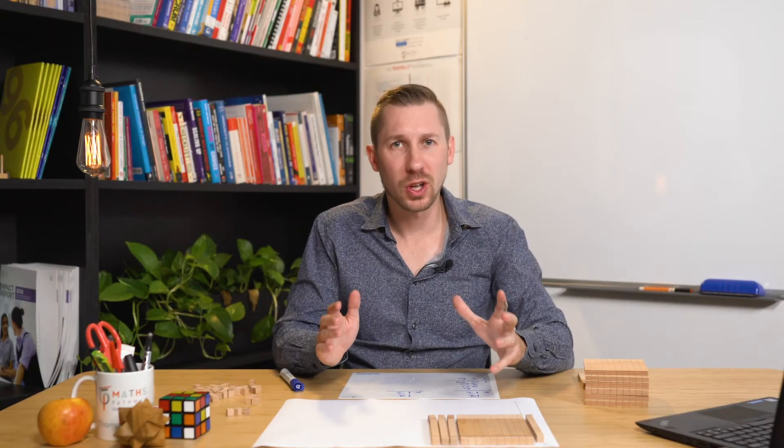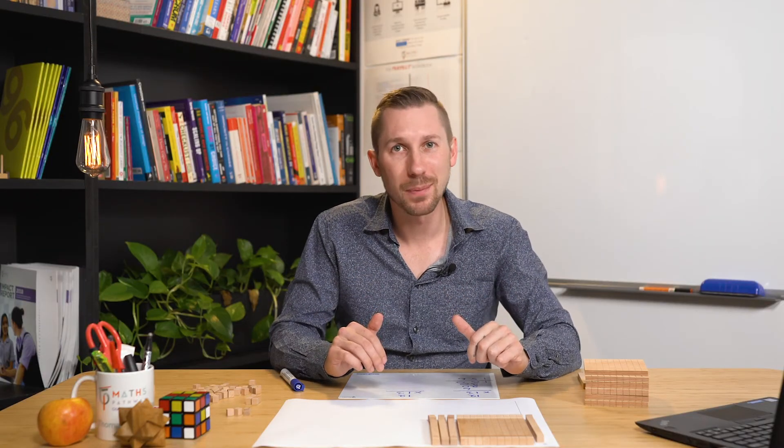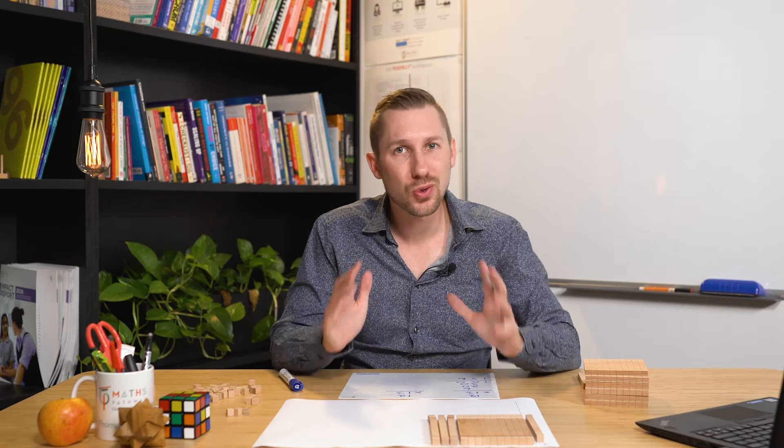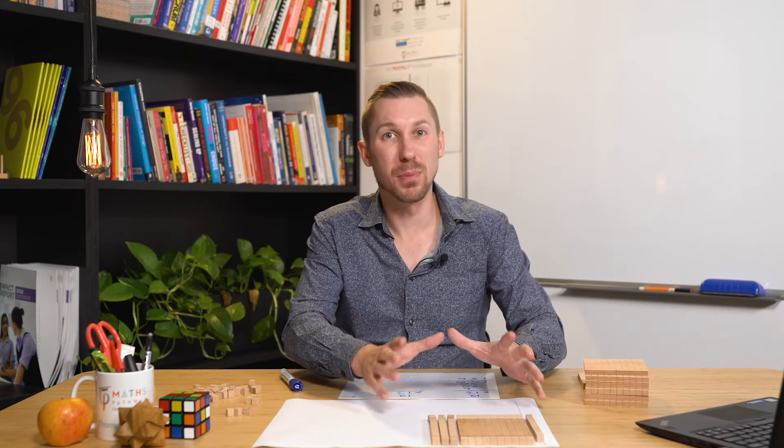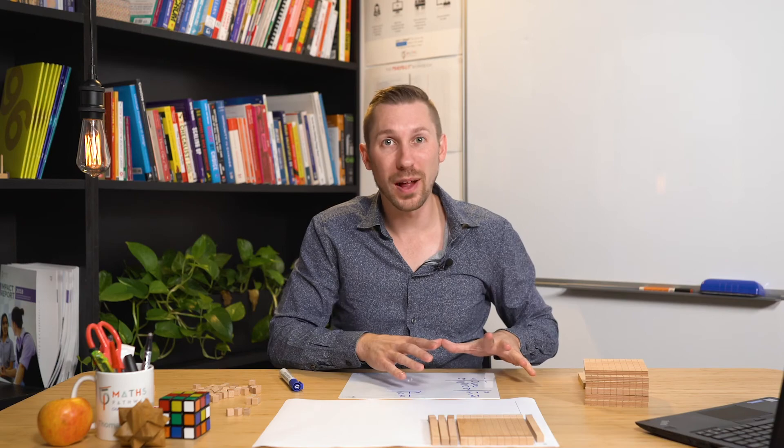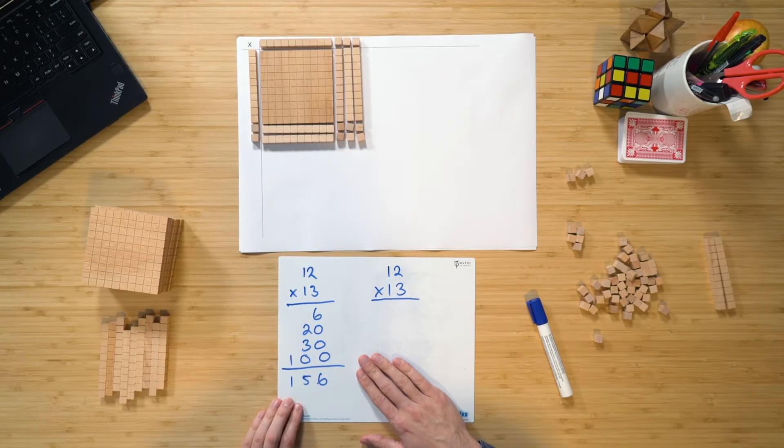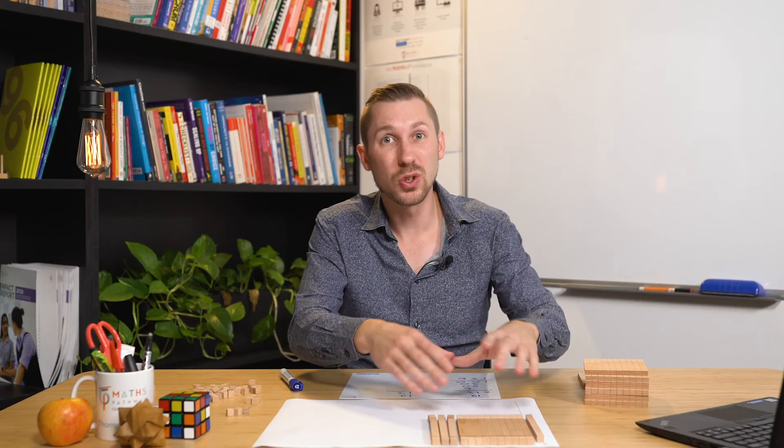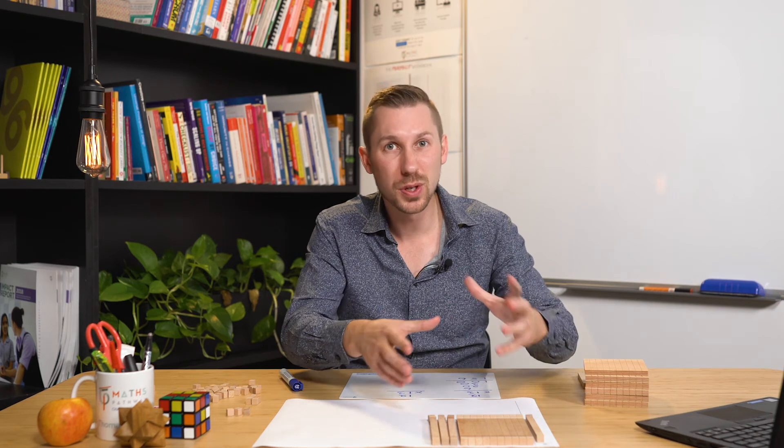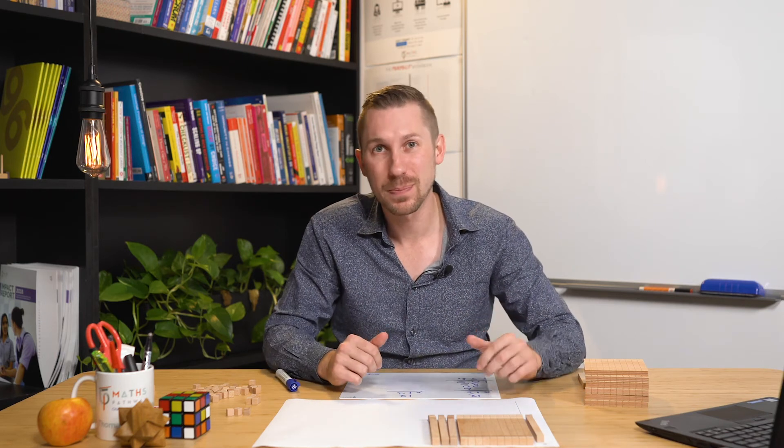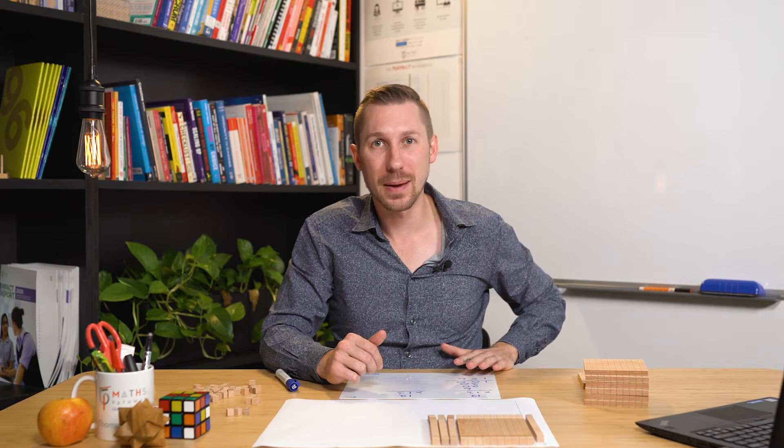Now, when first introducing the concept of multiplying two-digit numbers to students, I strongly recommend that you use just the model to do this. And don't worry about the formal algorithm stuff that you can see down here. So get the students to do this a number of times first to really get their head around how the model works. Once they do that, they'll be ready for this next step.